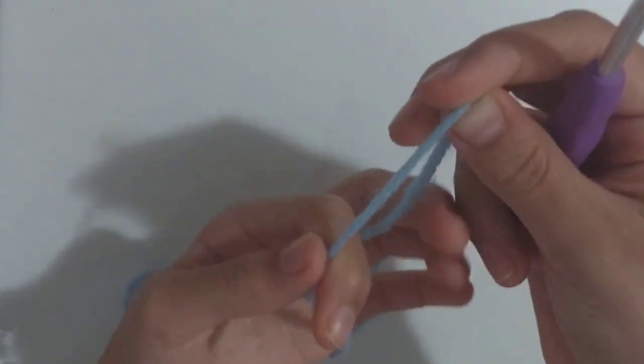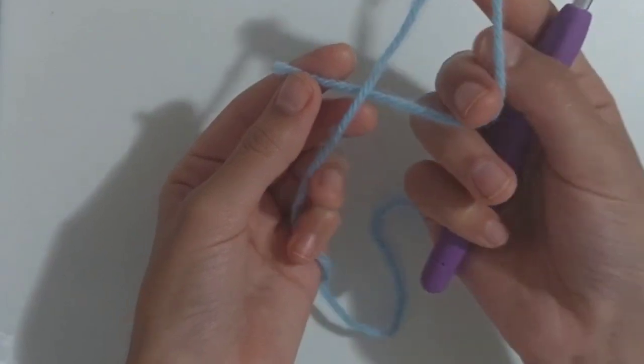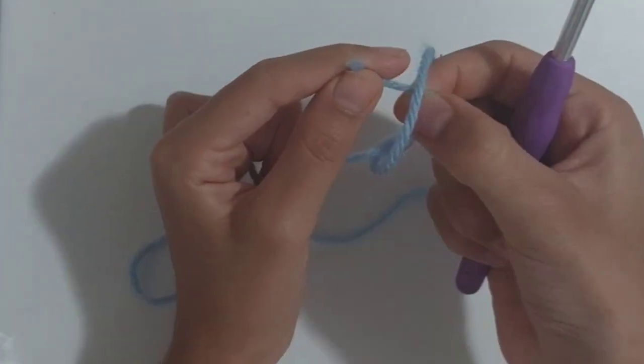First we are going to do a slipknot. To do that we are going to make an X. Put your fingers like this and pull the string.